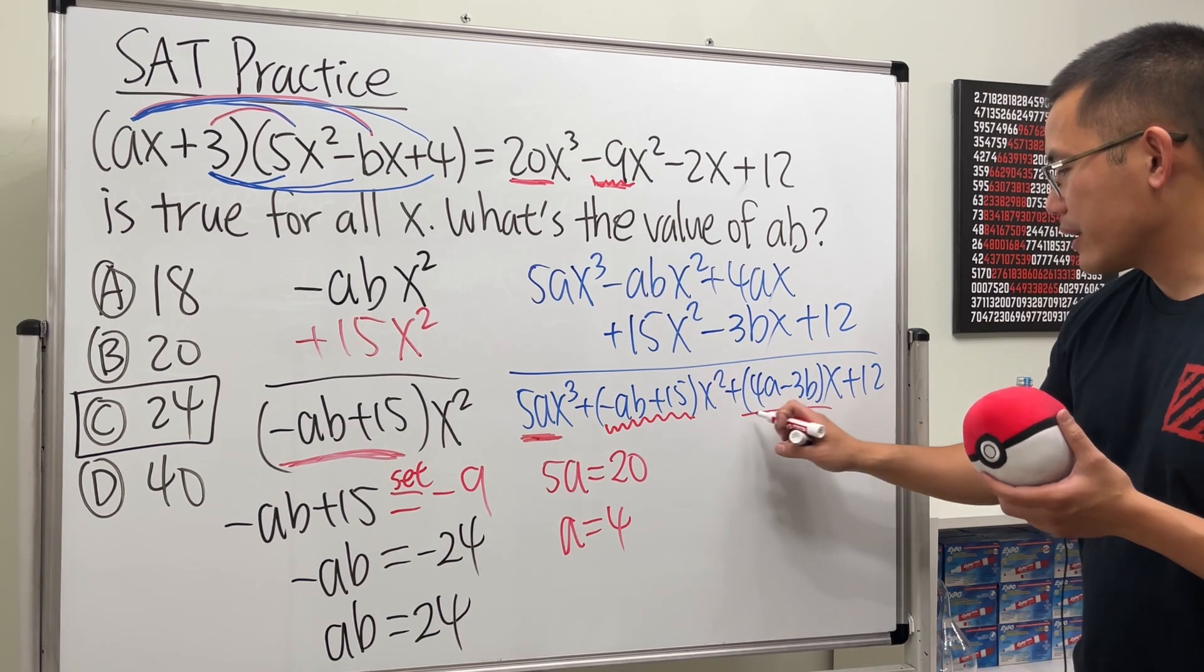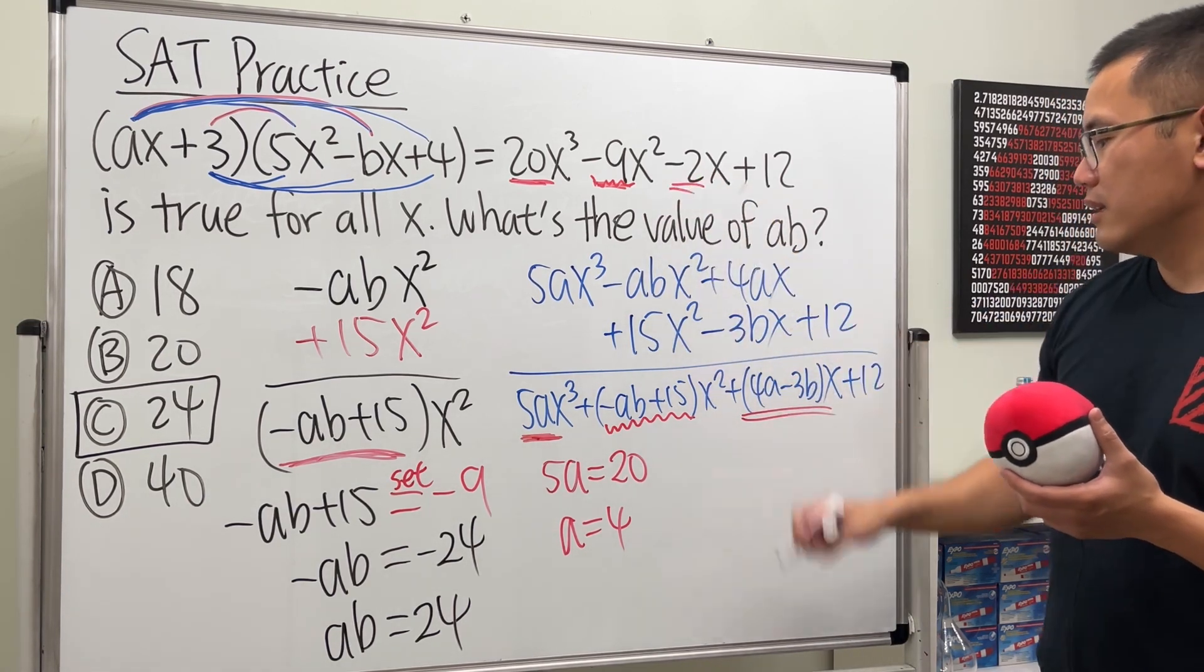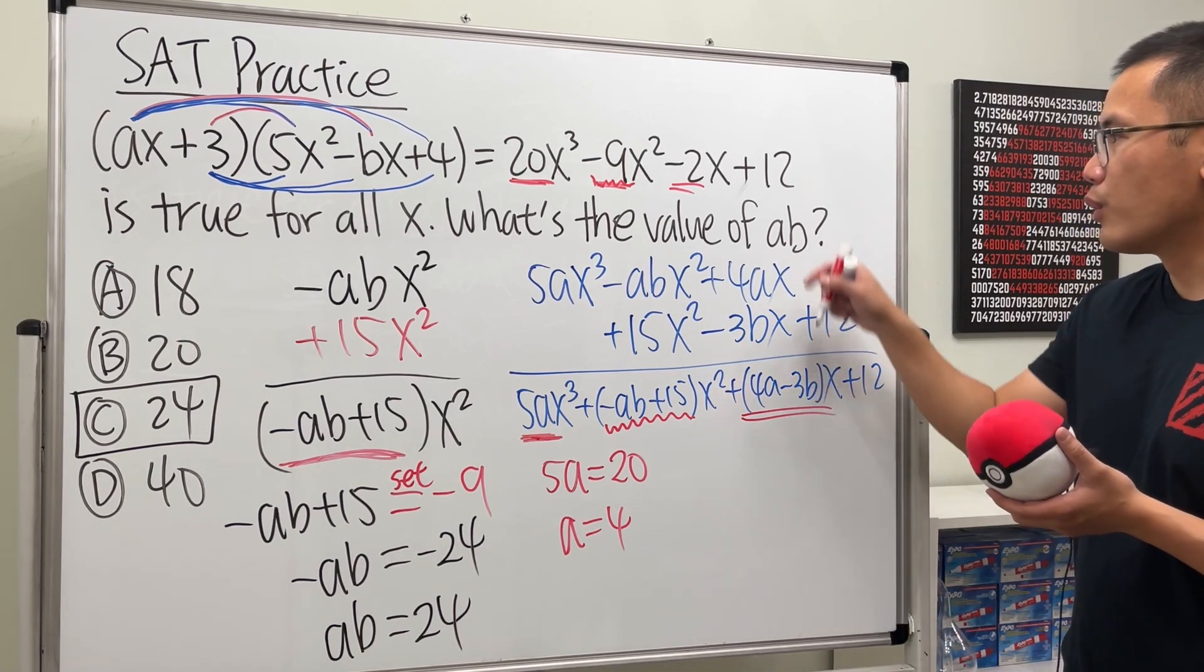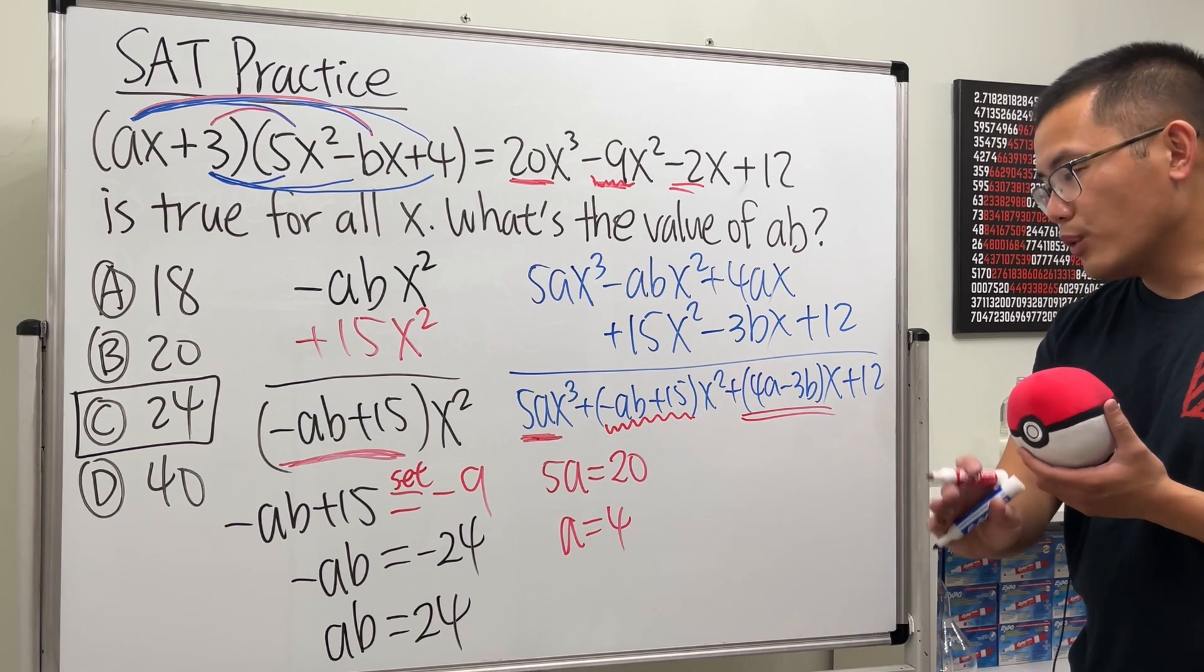You can also say this right here is the same as that. And then, from here, you can actually solve for what b is. And then, of course, 12 is equal to 12. But you know what?